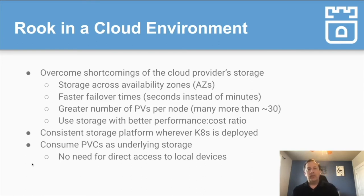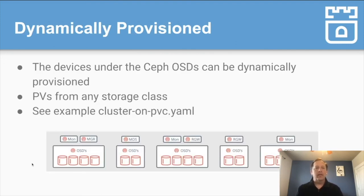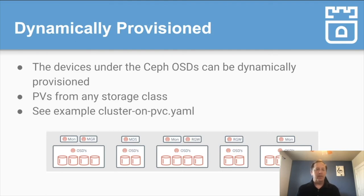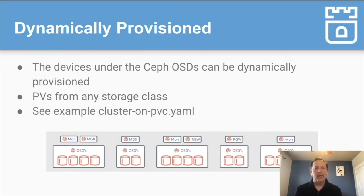Rook also gives you a consistent storage platform wherever Kubernetes is deployed. Under the covers, the Ceph OSDs will consume PVCs. The devices under the Ceph OSDs are dynamically provisioned from any storage class of your choosing, so these OSDs are backed by PVCs. For example, we have a cluster-on-pvc.yaml where that example is tuned to running on AWS with EBS volumes, which will be provisioned specifically for these OSDs from the cloud environment. In the next video, we'll show a demo on how to deploy a cluster in a cloud environment on PVCs.